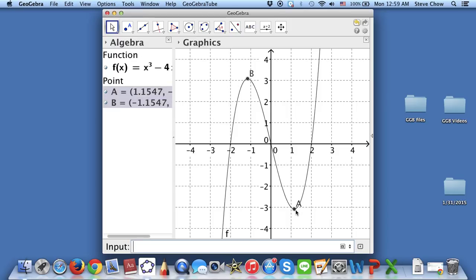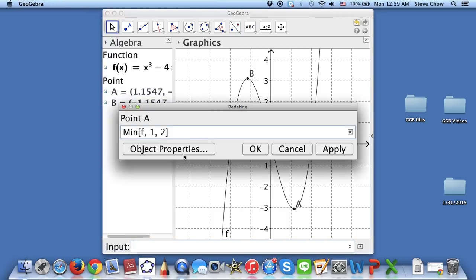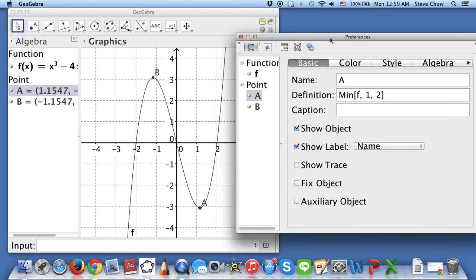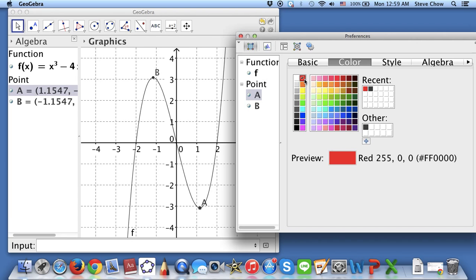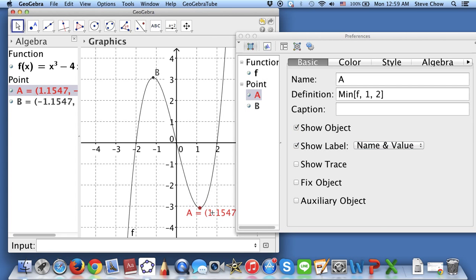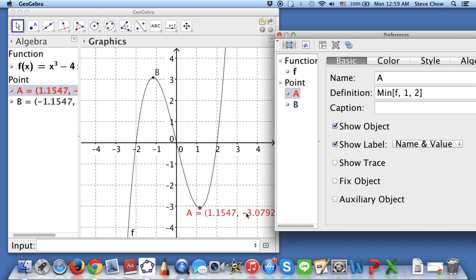And you can also double click on the point object property. And you can also make it, let me make it color in red first. But if you go to basic, you can have the name and the value. So you know what exactly this point is.